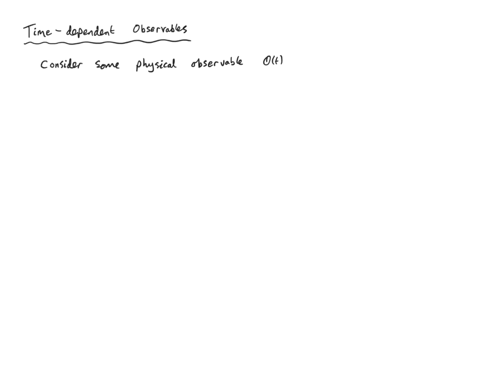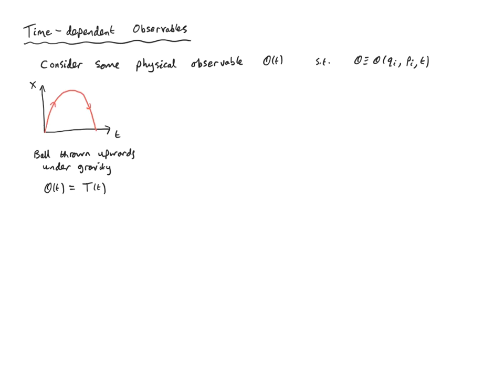In the first part of this lecture I want to consider the time dependence of observables. Consider some physical observable O of t — this is some observable that changes with time. This physical observable is controlled by and depends on the independent variables of the system: the generalized coordinates, the generalized momenta, as well as time. It may have both explicit and implicit time dependence. We refer to such an observable as a dynamical variable.